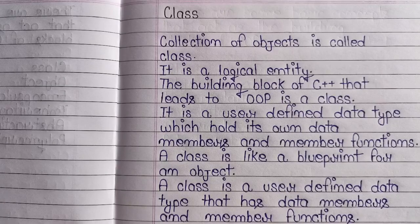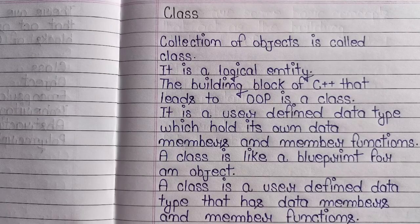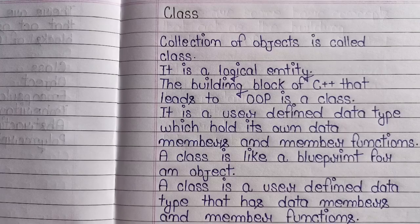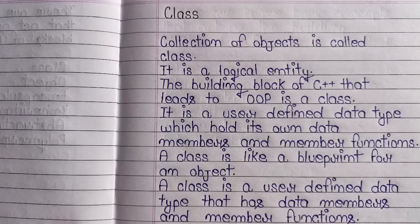Objects की collection को class बोलते हैं. Class एक logical entity है. C++ की जो building blocks होते हैं जो lead करते हैं object-oriented programming को, वो class है. Class एक user-defined data type है जिसमें data members और member functions होते हैं. Data member का meaning होता है कि आपने class के लिए कितना data लिया है, और member function का meaning होता है कि आपने उस class के लिए कितने member functions का use किया है.